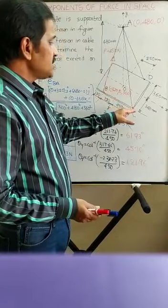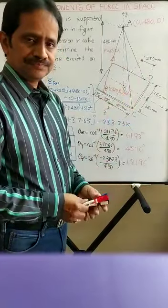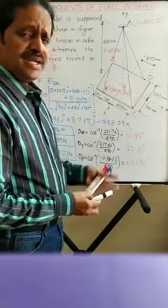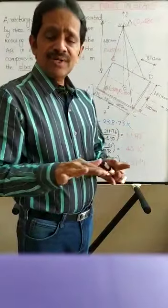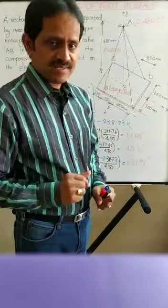Now let us write the coordinates of points C and D as well — it is not asked, just for practice. Point C is in the X-Z plane, so the Y coordinate is 0. To write the X coordinate, see the dimension line parallel to the X axis: that is 450. It is on the right-hand side, so it is plus 450. Y is 0, and for Z, see the line parallel to the Z axis: it is 360, on the positive side, so plus 360.